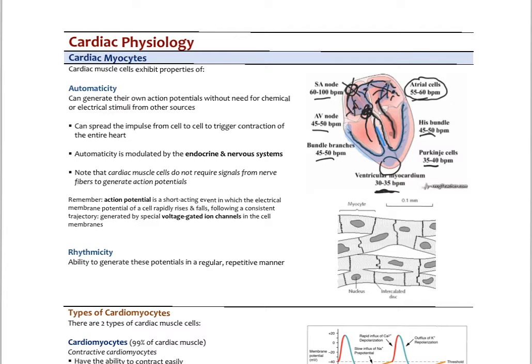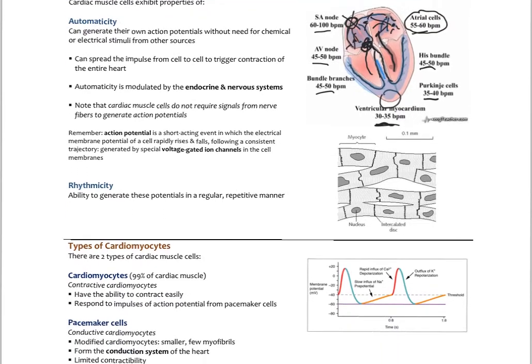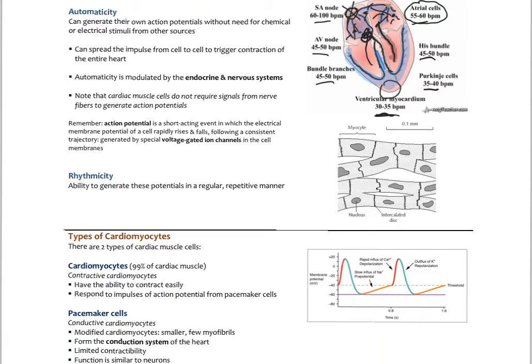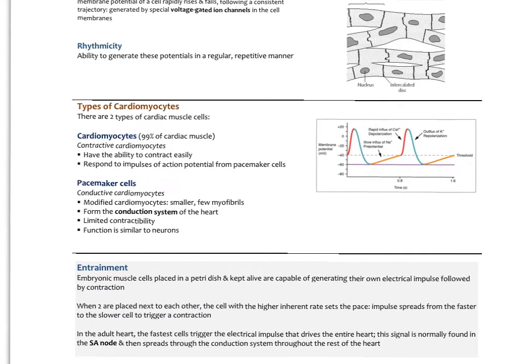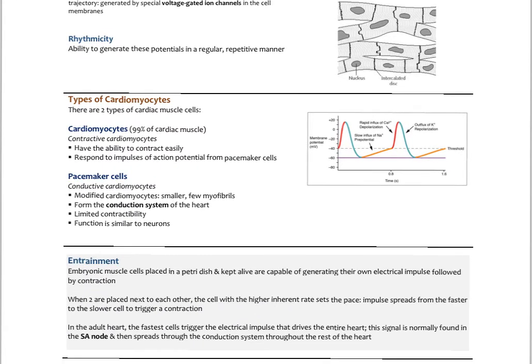So that's one feature: automaticity. The other is rhythmicity — the ability to generate potentials in a rapid and regular repetitive manner. Basically, if you look at the SA and the AV node, they're like a little clock; they can spontaneously depolarize at a regular rhythmic rate. That's why we call them pacemakers. Looking at the heart in general, we find two different types of cardiomyocytes.